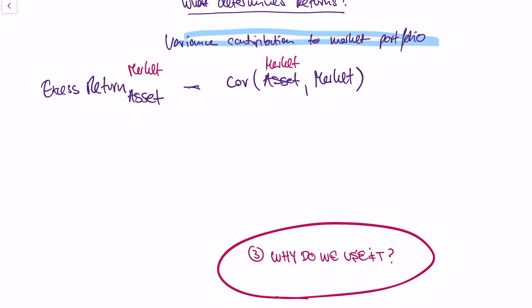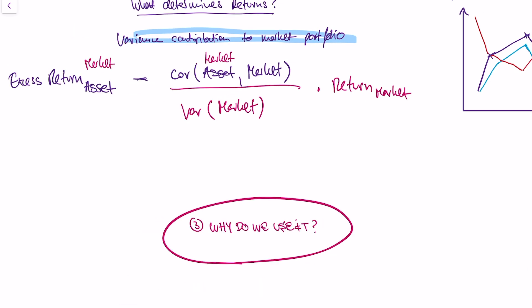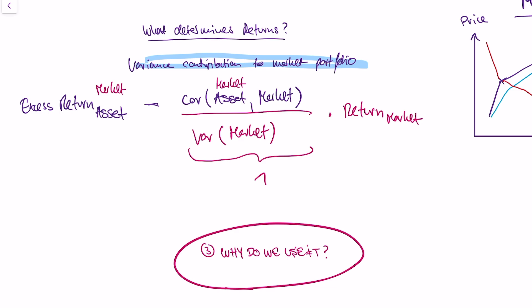To achieve that normalization, we divide by the variance of the market portfolio and multiply by the return of the market portfolio. That way, if our asset is the market portfolio, the covariance of the market with itself equals the variance of the market portfolio — giving a ratio of one — so the model correctly returns the market portfolio's return.